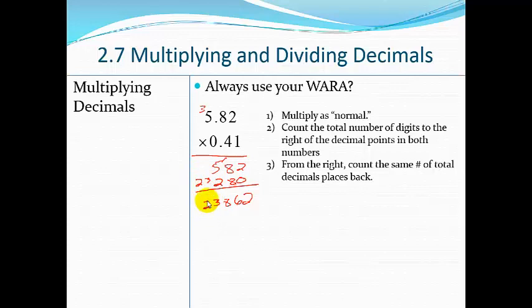Now, what I need to do, what's important, is you count the total number of digits to the right of the decimal points in both numbers. So to the right of this decimal, I have 1, 2. And then I have 1, 2. So I have a total of 4.